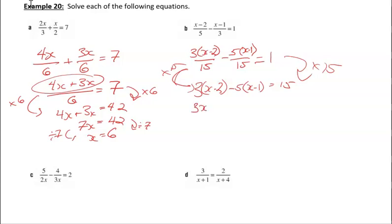So now I've got 3x. I've got to be careful here. 3 times 2 is negative 6. And I've got minus 5x. And here's where I've got to be careful. Negative 5 times negative 1 is actually going to give me a plus 5 equals 15. I'll gather my terms together. 3x minus 5x gives me negative 2x. And then negative 6 plus 5 is a minus 1. That'll equal 15. And then I add 1 to both sides to get rid of that minus 1. That gives me negative 2x equals 16. And then if I divide by negative 2 to get positive x, I'll divide by negative 2 to get negative 8, which is the answer for x.